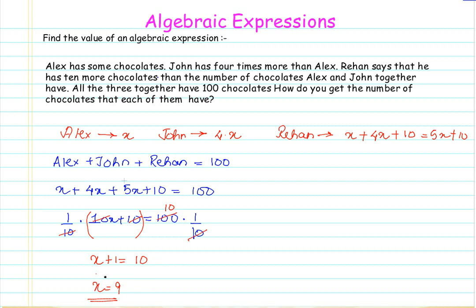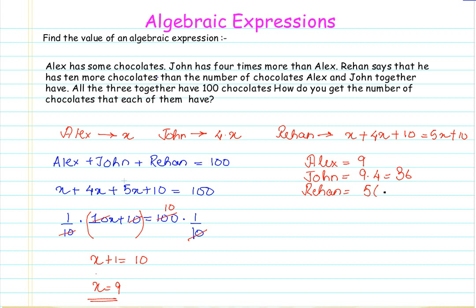So the number of chocolates Alex has is 9. To find what John has, we multiply 9 by 4, which gives 36 chocolates. For Rehan, the expression is 5x plus 10. Putting in the value of x as 9 gives us 5 times 9 equals 45, plus 10 equals 55. So Rehan has 55 chocolates.